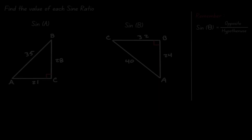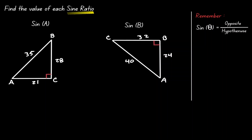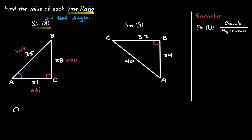Let's take a look at some examples. Given the triangles at the bottom, we want to evaluate the sine ratio. In the example on the left, we want to evaluate sine of A. The angle inside our parenthesis we can define as our reference angle. Let's identify that in our triangle. Now let's label our triangle: opposite of 90 degrees is the hypotenuse, opposite of our reference angle is the opposite, and what is left is the adjacent. Since sine of A equals opposite over hypotenuse, that is equal to the opposite, which in this case is 28, divided by the hypotenuse, which in this case is 35.